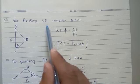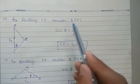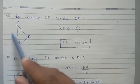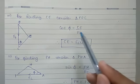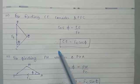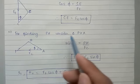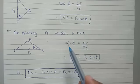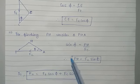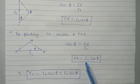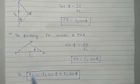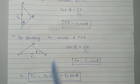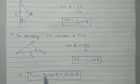We need to find CE and PH. For finding CE, consider triangle PEC. According to trigonometry, cos phi is equal to CE upon Ft, so CE is equal to Ft cos phi. For finding PH, consider triangle PEHA. We can say sin phi is equal to PE upon Fc, so PH is equal to Fc sin phi. Substituting the values of CE and PH, we get FN is equal to Ft cos phi plus Fc sin phi.